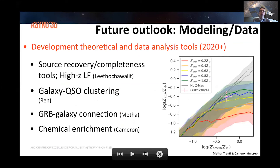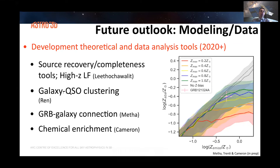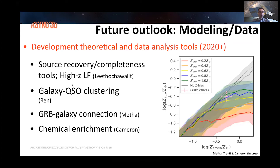Let me conclude briefly with a few words on future outlook. In the immediate term, we are busy as a team focusing on further modeling and analysis of Hubble data. Nietzsche is completing our source recovery completeness tools and plans to apply them to high-redshift luminosity function determinations from Hubble. Kevin Ren is moving on to studying the clustering of galaxies around bright quasars. Ben and Alex are studying the GRB-galaxy connection and related chemical enrichment.